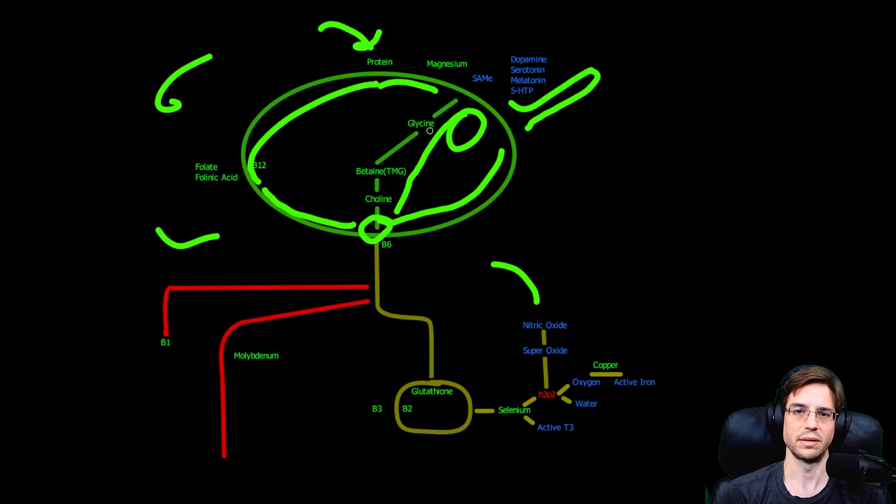But what we want to do, once we're getting this system running decently, is this homocysteine now uses B6 through our CBS gene. So a lot of people are saying, do I supplement B6? What do I do about a bad CBS? The CBS is this junction right here. If CBS is not working right, doesn't have the right nutrients, or doesn't have a demand on it, then the homocysteine is never going to come down here.